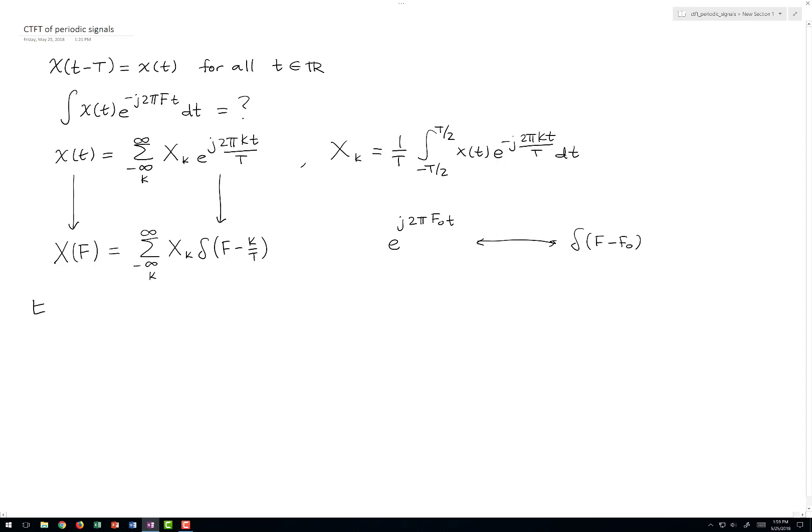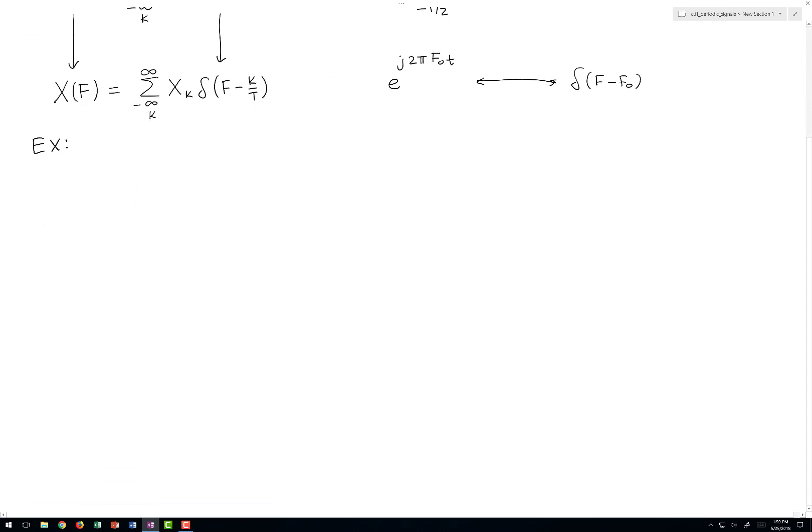Let's look at an example. Let's suppose we have a periodic signal, which is a train of Dirac delta functions, repeating every capital T seconds. This signal looks like this.